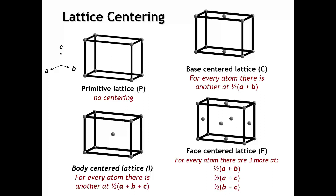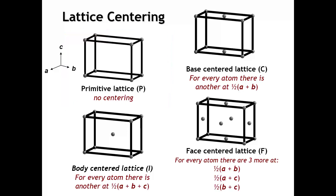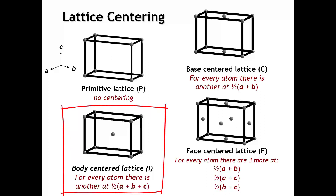Now, as we saw in two dimensions, we can have centered lattices. But in three dimensions, there's actually more than one way to obtain a centered lattice. Looking at a primitive orthorhombic unit cell with a lattice point only at each corner, one option would be to put a lattice point at the very center of the unit cell. That gives us two lattice points per unit cell — one at the corners and one at the body center — so this is called a body-centered lattice.